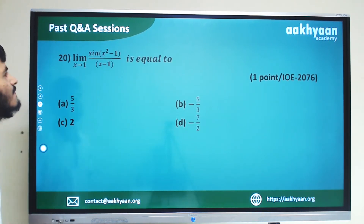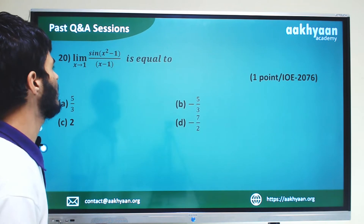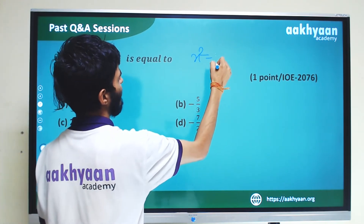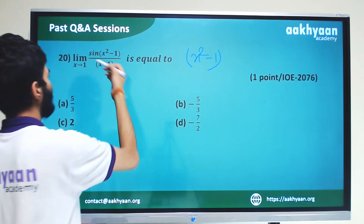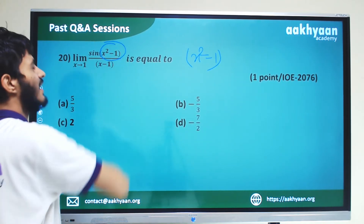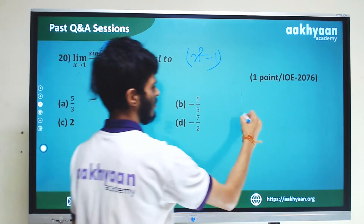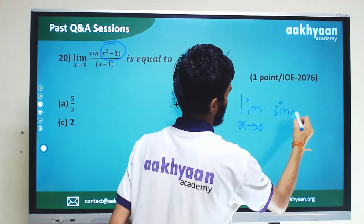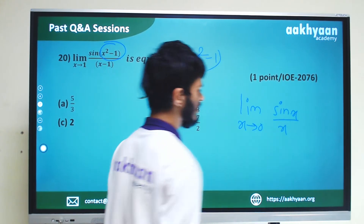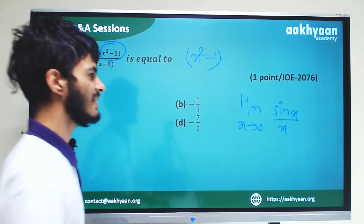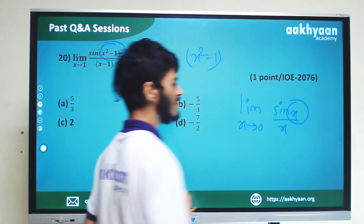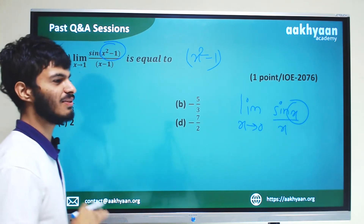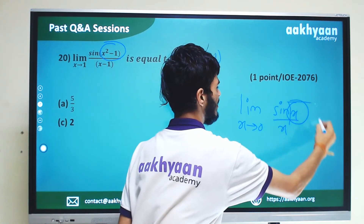In the next problem, we are given limit x tends to 1 of sin(x squared minus 1) by x minus 1. Since x squared minus 1 tends to 0 as x tends to 1, this is of the form sin(x squared minus 1) by (x squared minus 1), times (x plus 1). Using sin x by x tends to 1 as x tends to 0, the result equals 1 times 2, which is 2.